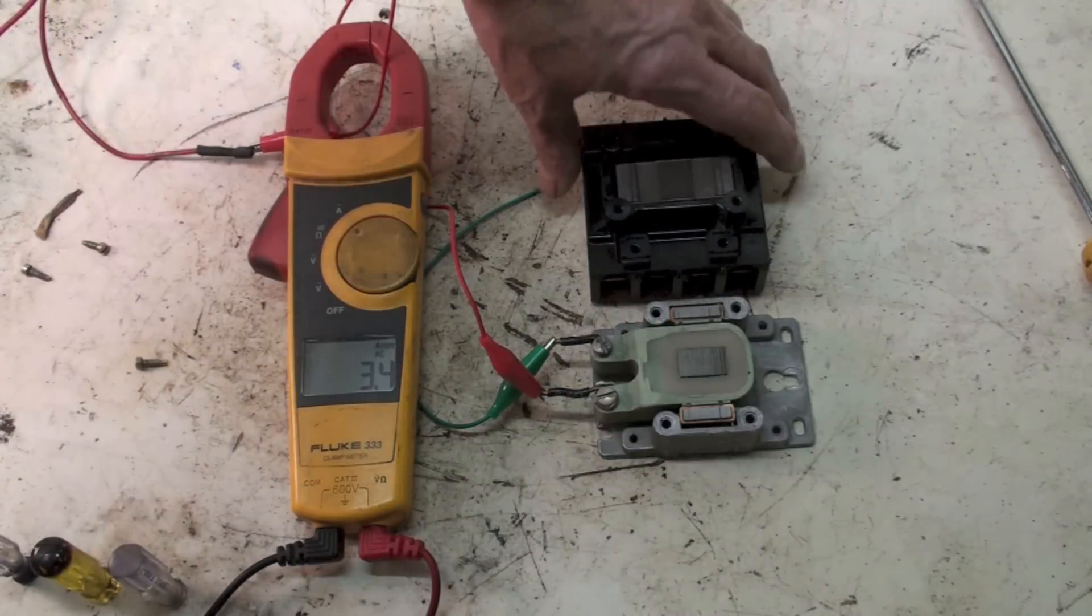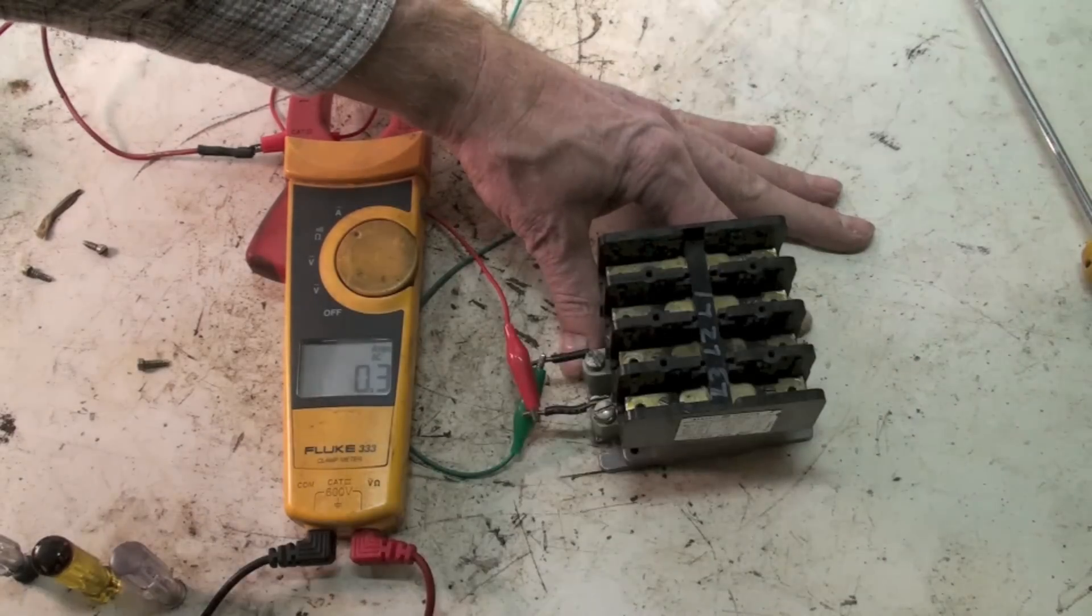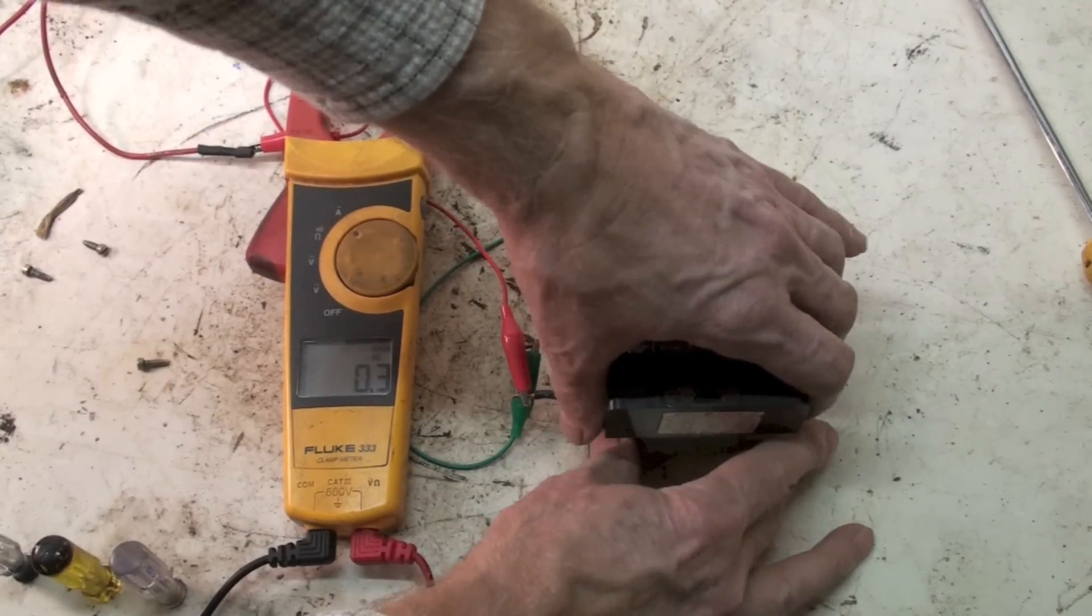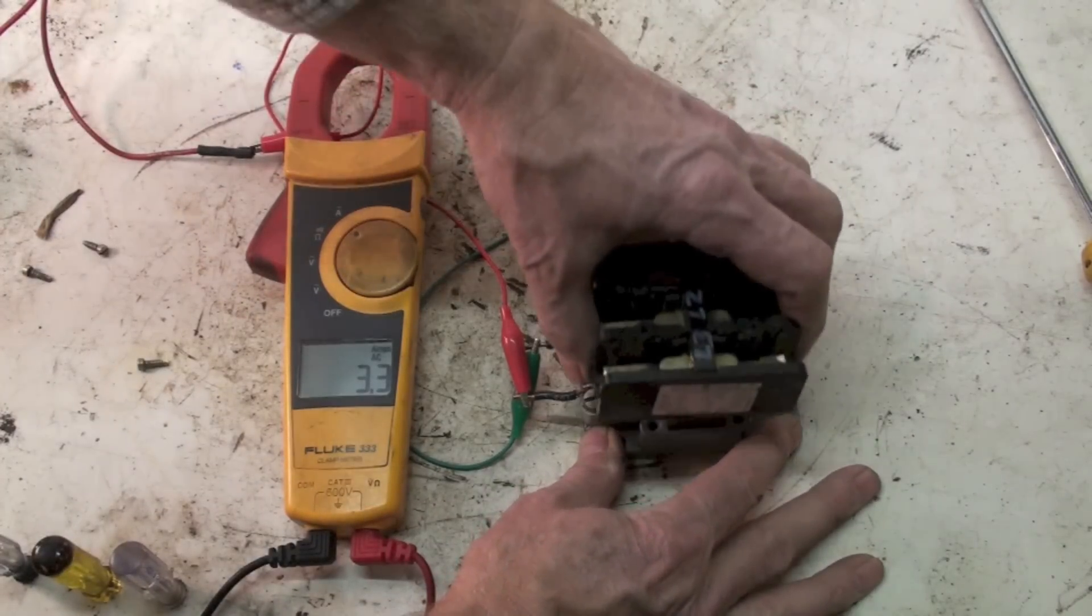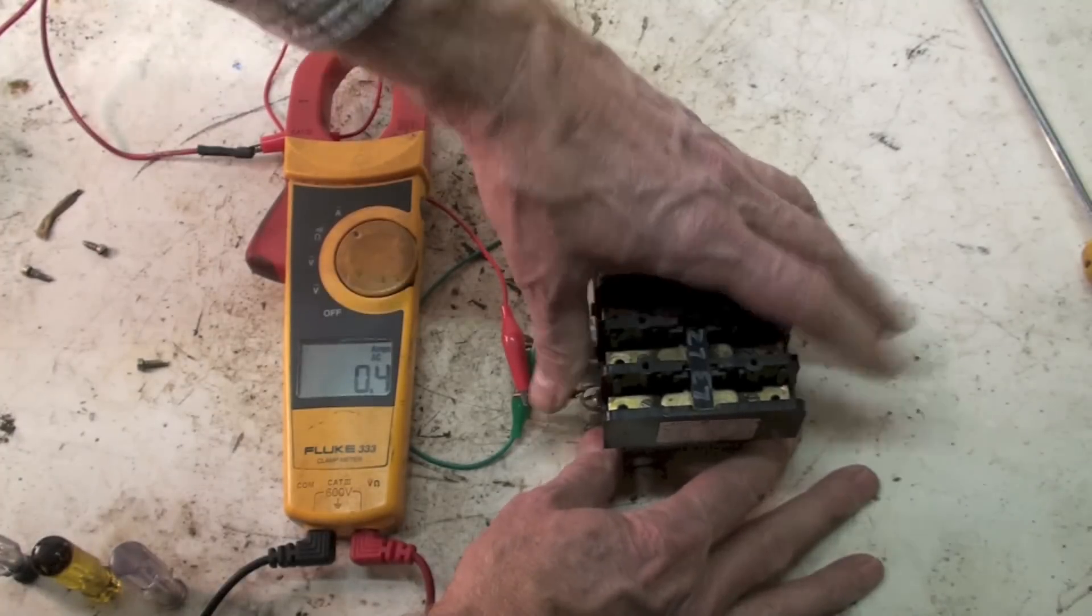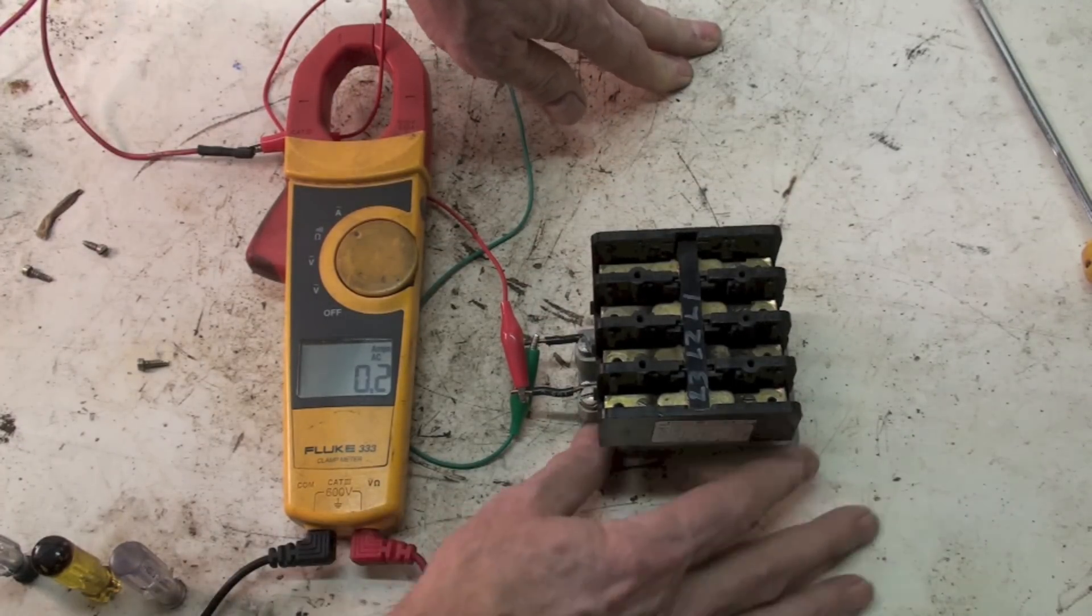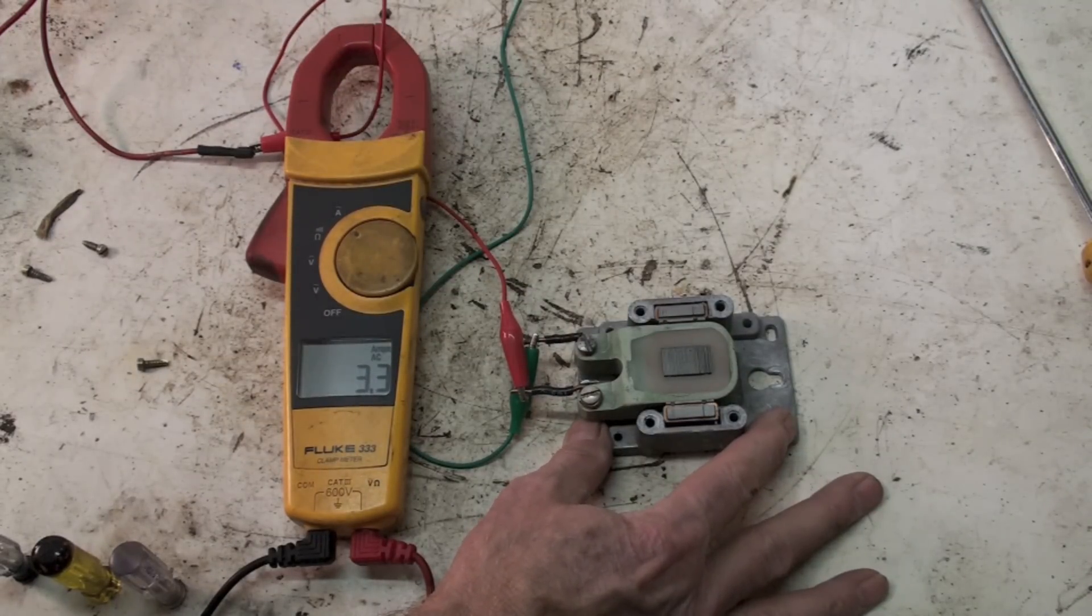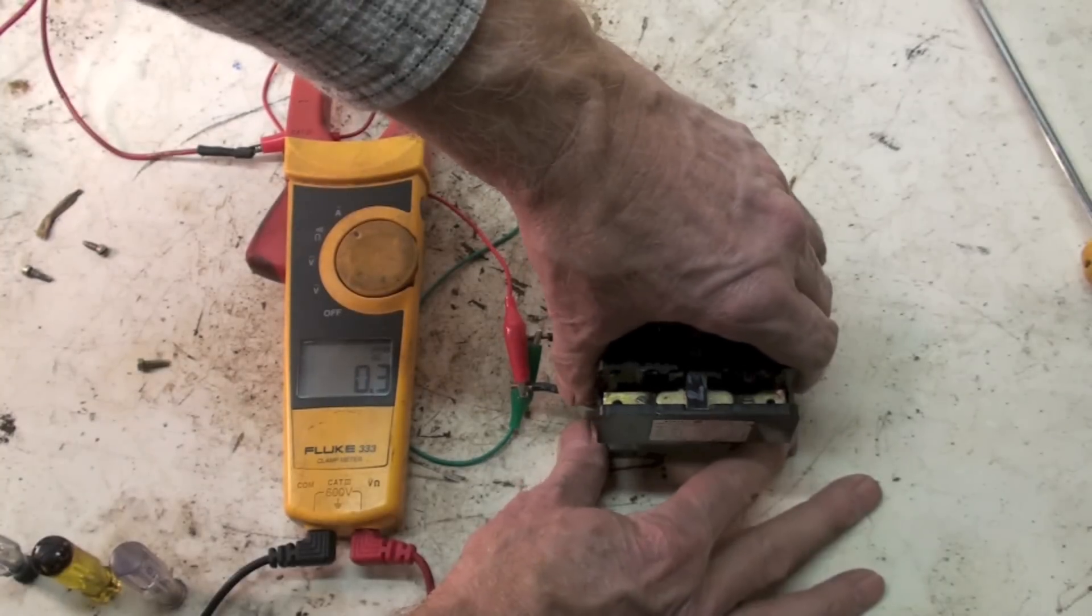I'll take this, see what happens - went down to 0.3. Pull off again, 3.4. Put it on, 0.3 again. And 3.3 whatever. Why did it do that?